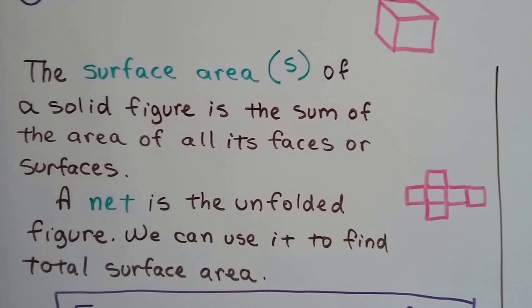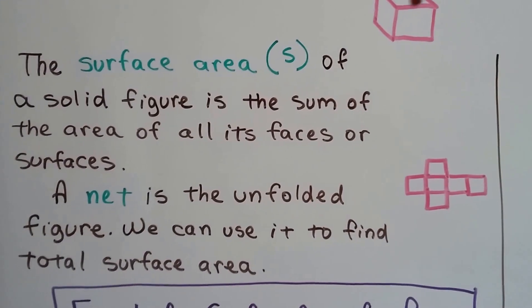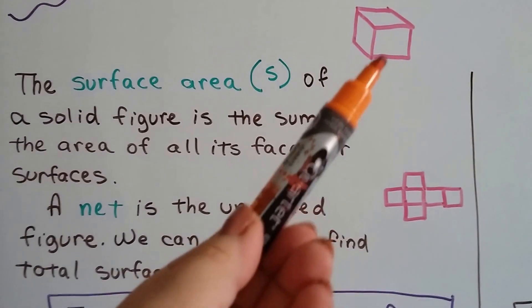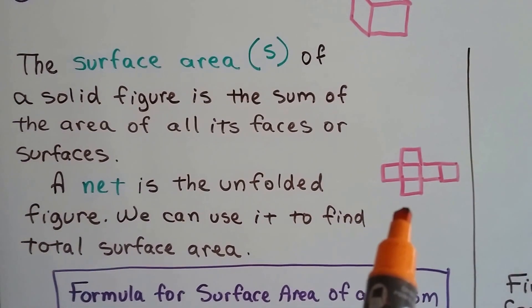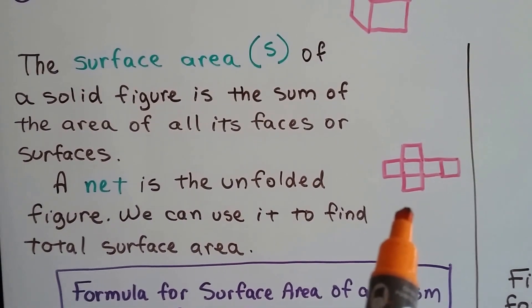So to find the surface area of this cube, we'd need to find the area for the top, the bottom, and all the sides going around. A net is the unfolded figure, and we can use it to find the total surface area.